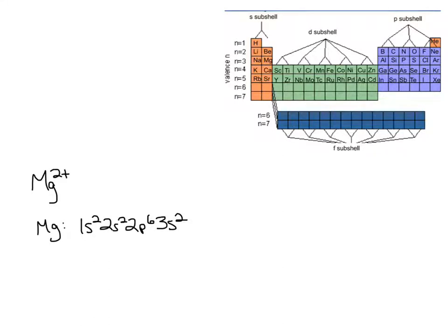Now it's considered Mg2+. 2+ has lost two electrons. So where am I going to lose these electrons from? They're always going to be coming out of the outermost shell, the valence shell, the ones that are furthest from the nucleus, because they'll be easiest to remove.